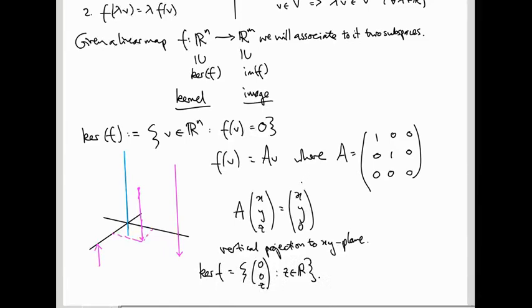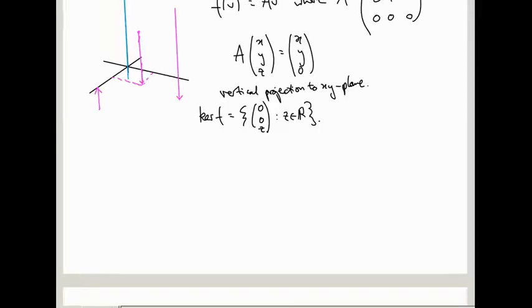So there was an example very early on, when we were looking at 3 by 2 matrices and whatnot, where we had a picture like this. I think the matrix was... it was (1,0,-1; 0,1,-1).